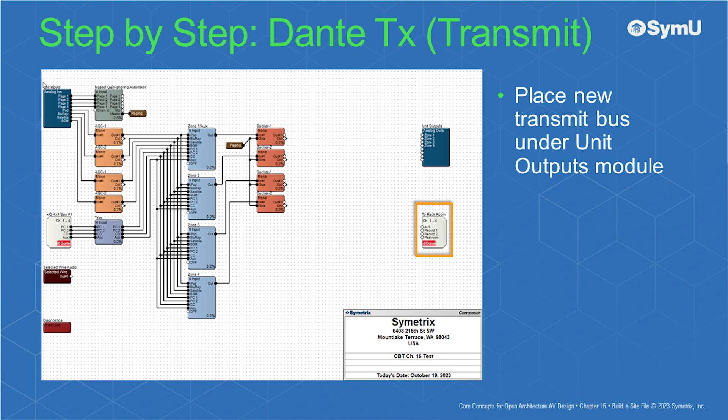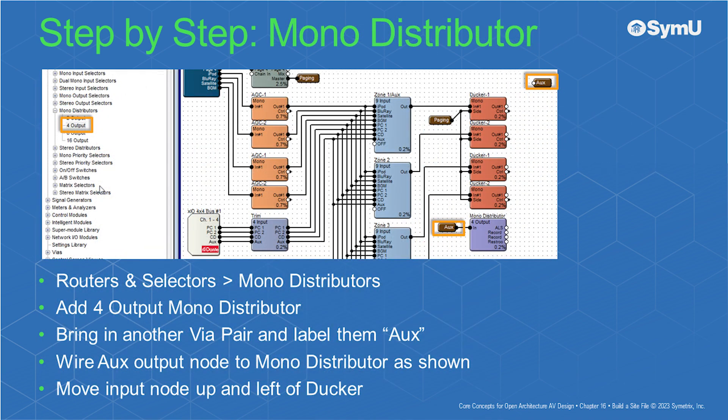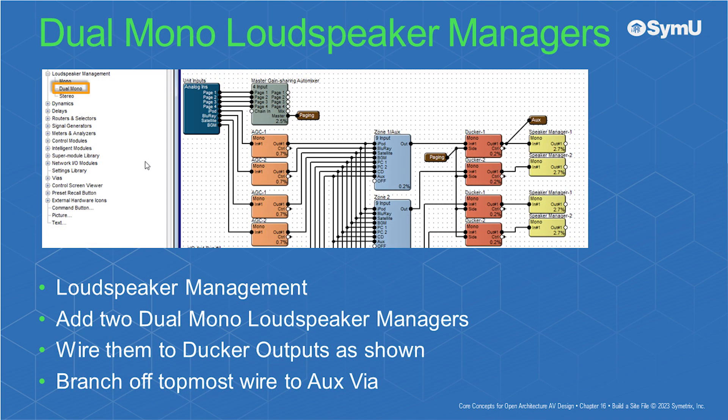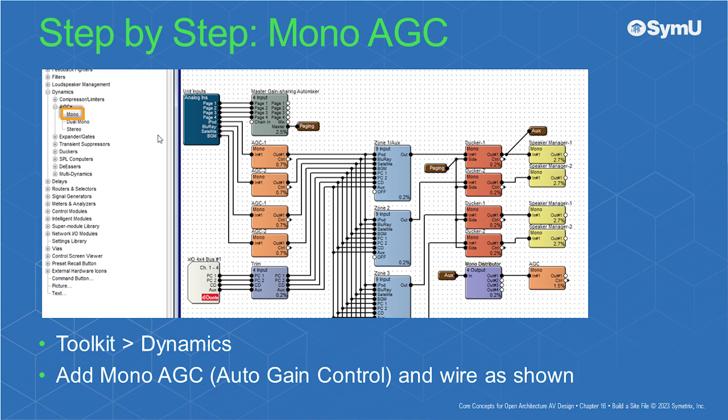Place the new transmit bus under the unit outputs module. This bus will send back to the XIO 4x4. Under routers and selectors, mono distributors, add a four-output mono distributor. Then bring in another via pair and label them 'aux.' Wire the aux output node to the mono distributor as shown and move the input node up and right of the ducker. Under loudspeaker management, add in two dual mono loudspeaker managers. Wire them to the ducker outputs as shown, then branch off the topmost wire to the aux via. From the dynamics menu of the toolkit, add a mono AGC and wire the AGC as shown.